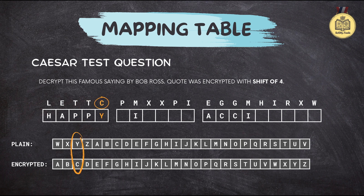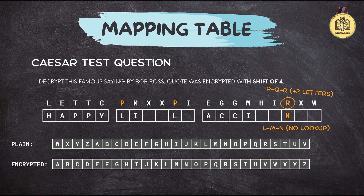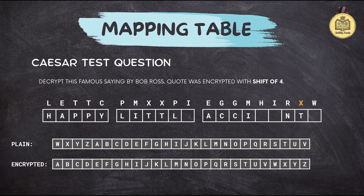Now we've got C, which decodes to Y, followed by P, which decodes to L. Now we have an R — applying our handy shortcut, R comes right after P, which decodes to L, so R must decode to N. You're using the table less and relying more on your understanding of the pattern. Moving along, we have X, which maps back to T. Next is W, which we can decode to S because it's one letter before X, which decodes to T.